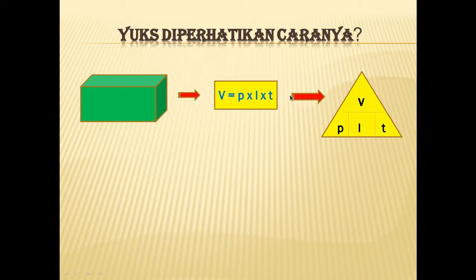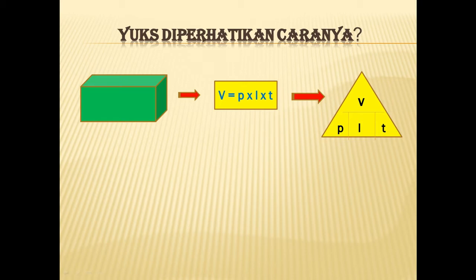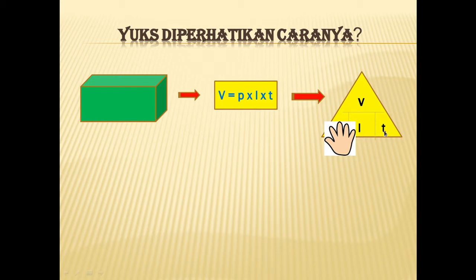Dari volume ini, kita akan ubah ke bentuk seperti ini. Cara ini sudah pernah kalian dapatkan, pada rumus-rumus semester 1. Caranya bagaimana? Perhatikan di sini. Ini dibacanya sama: volume rumusnya panjang dikali lebar dikali tinggi. Yang tegak ini dibacanya adalah dikali, kemudian yang mendatar ini dibacanya adalah dibagi. Bisa dipahami? Alhamdulillah. Unsur yang ditanya itu kita tutup, sama seperti cara-cara sebelumnya. Misalkan ditanya panjang atau P-nya, berarti P-nya kita tutup.